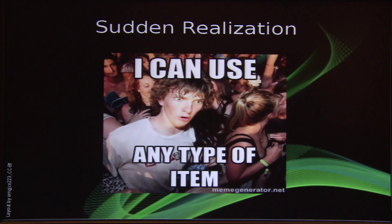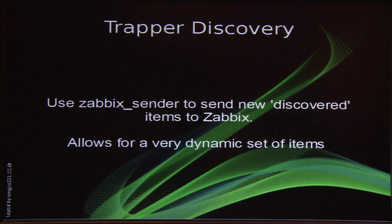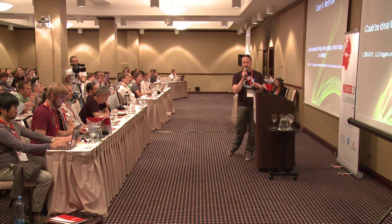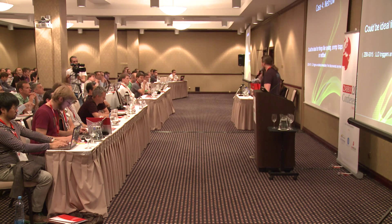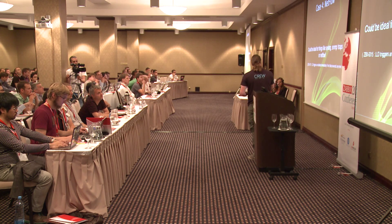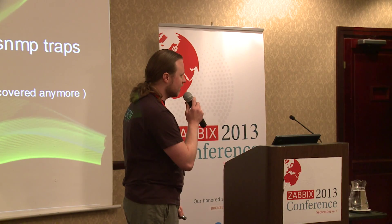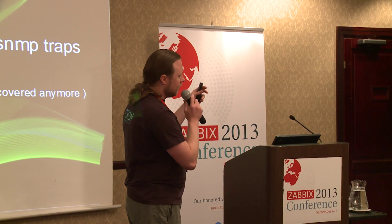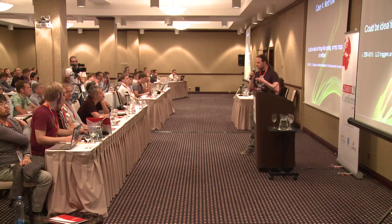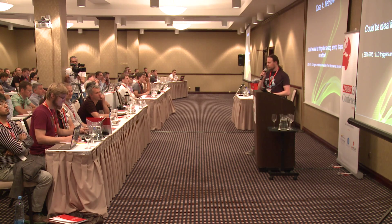I was busy with this and at some point I had a sudden realization: I can use actually any type of item. You can use Zabbix sender to actually tell Zabbix what items it needs to monitor on a host. This allows for a very dynamic set of items. This could be ideal for things like syslog or SNMP traps or whatever. There's only one problem — the Zabbix bug: LLD triggers are deleted automatically if there is no discovery for this item anymore. This kind of breaks my idea, but it's still good for graphing because the items are still there, so you can still push data into them.